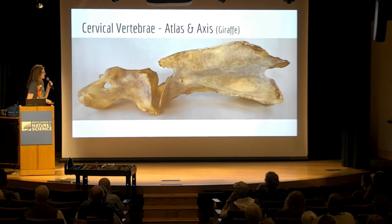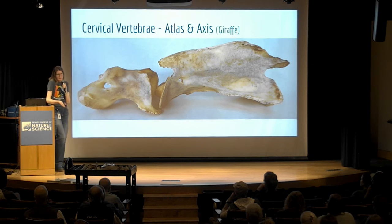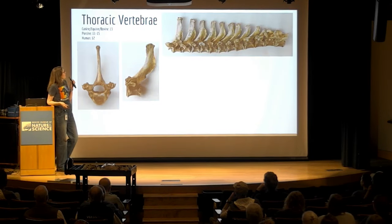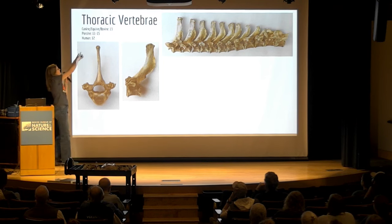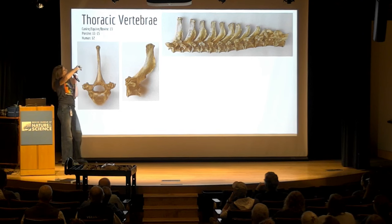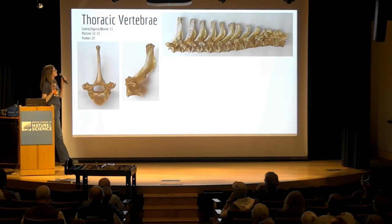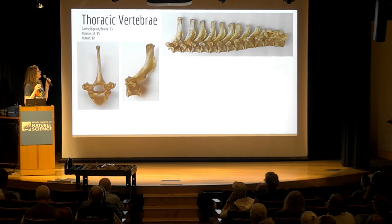Here's a different view of the giraffe atlas-axis from the side. These are really cool bones. Moving down: thoracic vertebrae. For all the rest of the sections I'll have the vertebral formula up, so you can see how many each species has comparatively.